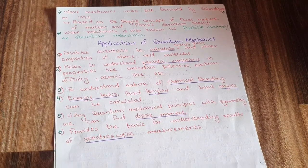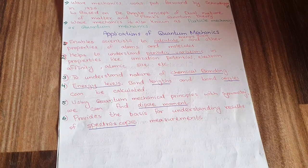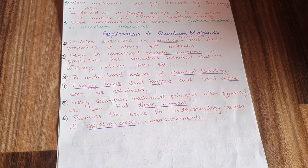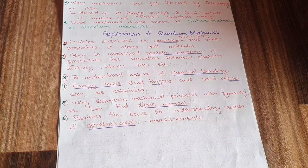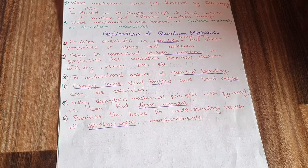Finally, quantum mechanics provides the basis for understanding spectroscopic measurements. The measurements made through spectroscopy can only be understood through quantum mechanics. That covers what quantum mechanics is, what classical mechanics is, why classical mechanics fails, and the applications of quantum mechanics.